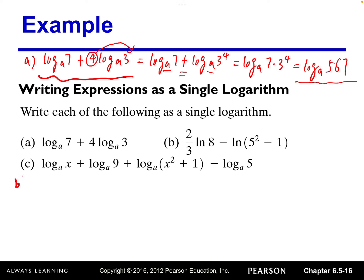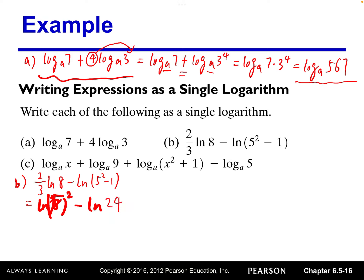Let's try part b: two-thirds ln of eight minus ln of five squared minus one. We deal with each term. Two-thirds is the coefficient so it becomes the power — eight raised to the two-thirds means the cube root of eight squared. The second term simplifies: five squared is 25, 25 minus one is 24. The cube root of eight is two, two squared is four.